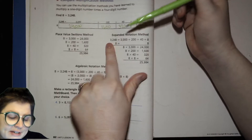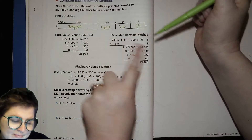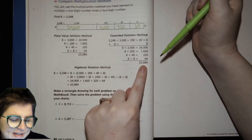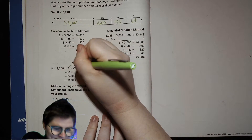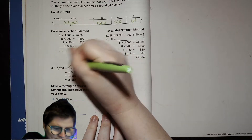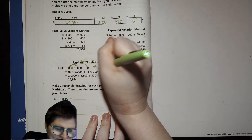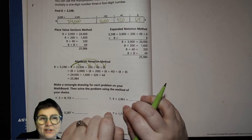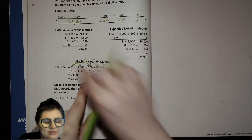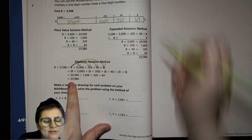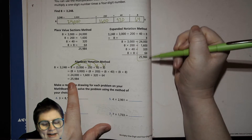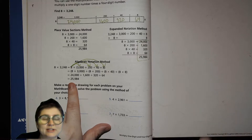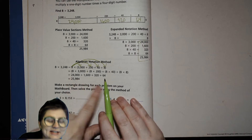If you write it out in expanded notation form, it's the same thing — you'd get the same number with the algebraic notation method: 8 times 3,000, plus 8 times 200, plus 8 times 40, plus 8 times 8. Is anything different? Not really — you're just doing it more sideways. I do find adding things in the vertical method to be a lot easier than adding things in this sideways method.